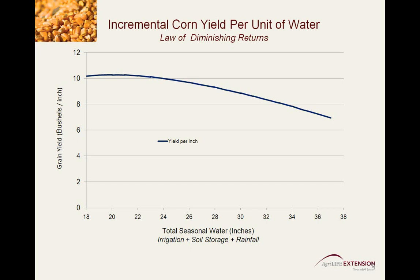If we take the information from the production function and analyze it for incremental yield gain per inch of water applied, we see that each subsequent inch of water after about 20 inches returns a less significant incremental yield than the previous inch. This is referred to as the law of diminishing returns, just like basic economics. The peak of this curve occurs at about 20 inches — this is the point of maximum water use efficiency.